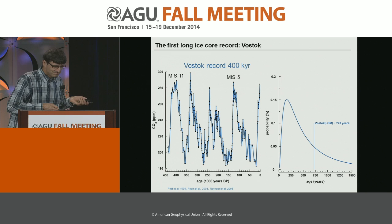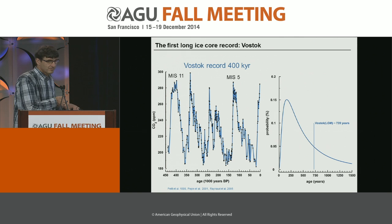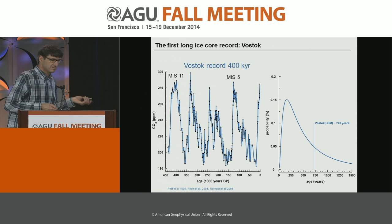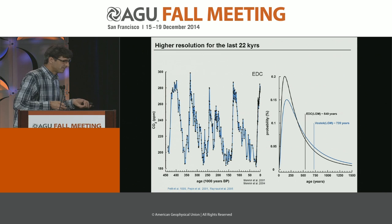Yet in the past, drill sites were often chosen to provide very long records, like the famous Vostok record, which informed us about the last four glacial cycles. You can see that CO2 varied during glacials around 180 ppm and during interglacials up to 280 ppm. Vostok has a really broad age distribution, so it's not suitable for any highly resolved records. But people wanted to know not only the concentration, but the processes behind — and then the race began to come up with higher and higher resolved records.